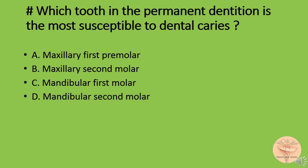Which tooth in the permanent dentition is most susceptible to dental caries? Option A) maxillary first premolar, option B) maxillary second premolar, option C) mandibular first molar, or option D) mandibular second molar. The correct answer is option C: mandibular first molar, because it is the first permanent tooth to erupt in the oral cavity.